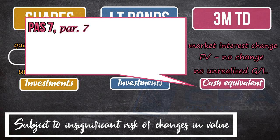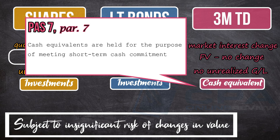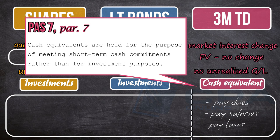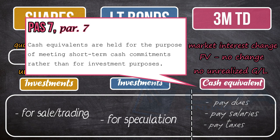Finally, PAS 7, paragraph 7, states that cash equivalents are held for the purpose of meeting short-term cash commitments, rather than for investment purposes. Therefore, as one final requirement, cash equivalents, like cash, must be for use once it matures — for example, to pay dues, salaries, and taxes. If the entity decides to hold the time deposits for sale, trading, or speculation, these are all investment reasons. Thus, the 3-month time deposit, or any supposed cash equivalent, is no longer presented as cash equivalent — it is now presented as investment.